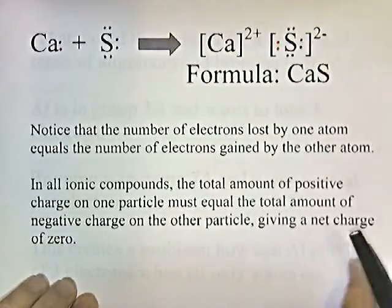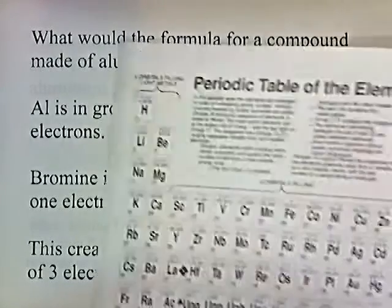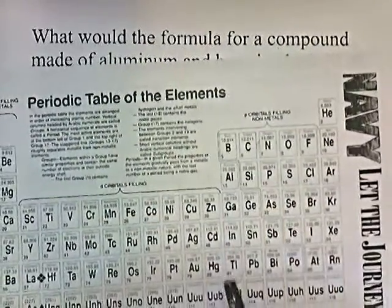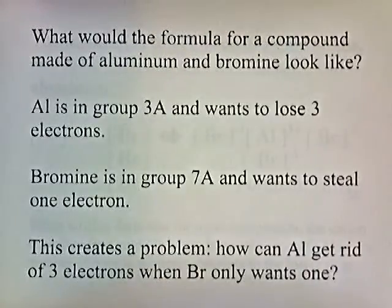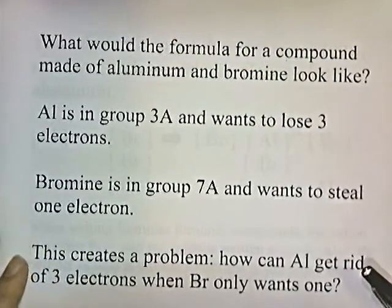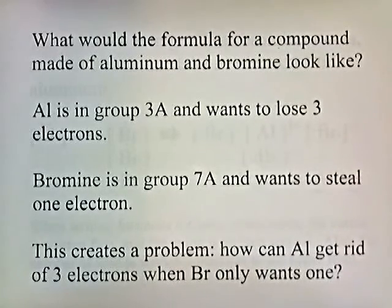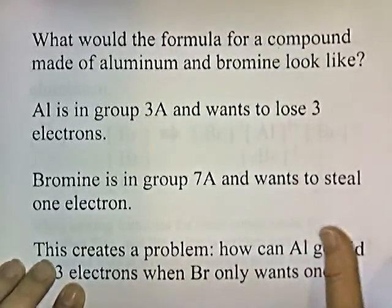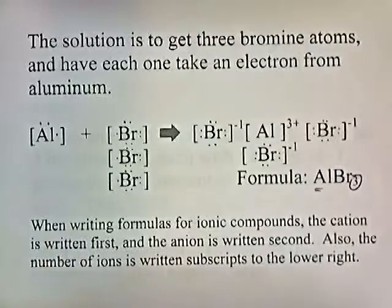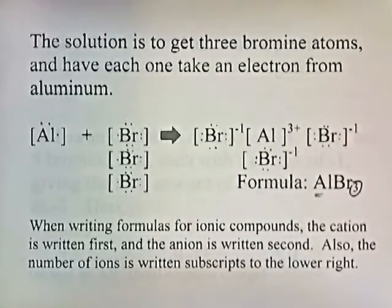What would the formula for a compound made out of aluminum and bromine look like? Aluminum is in group 3A and wants to lose three electrons. Bromine is in group 7A and wants to steal one electron with an oxidation number of negative one. This creates a problem: how can aluminum get rid of three electrons when bromine only wants one?